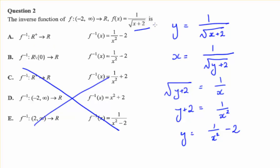You could sketch it on your calculator, however if you look at this function carefully and look at the domain, you'll notice that the range of this function has to be positive numbers. It has to be positive because we can't take the square root of a negative quantity, and we have 1 over a positive quantity, so this is guaranteed to be positive. The range of our original function is the domain of our inverse, so we're looking for the one with a domain of positive reals.